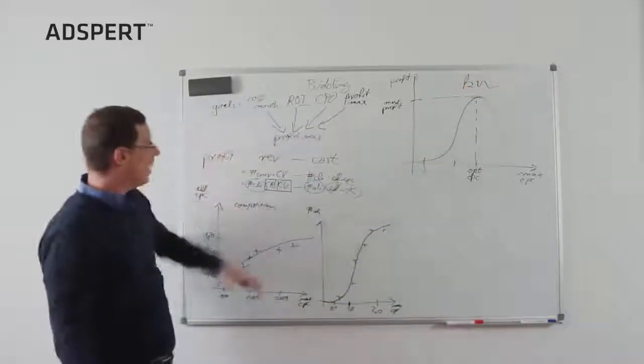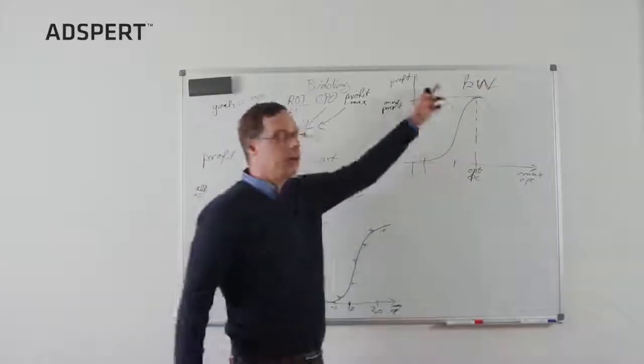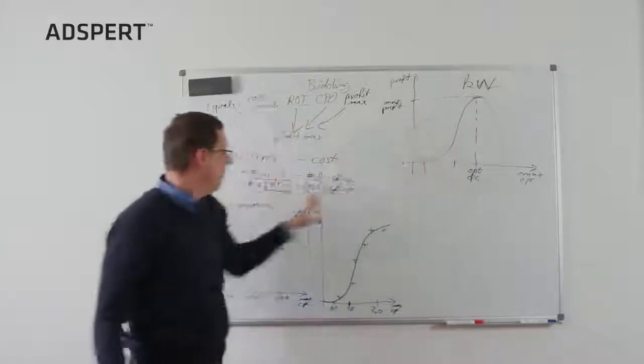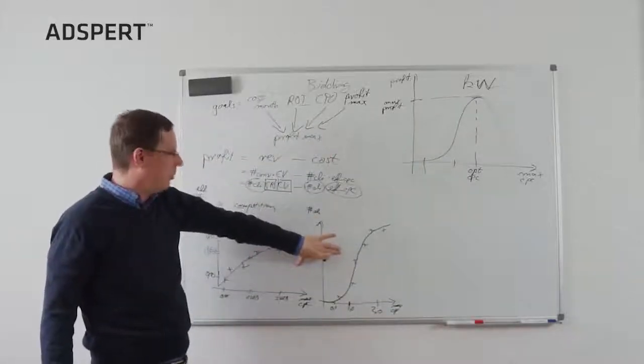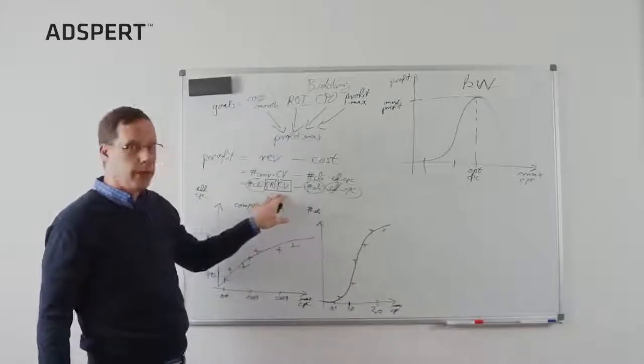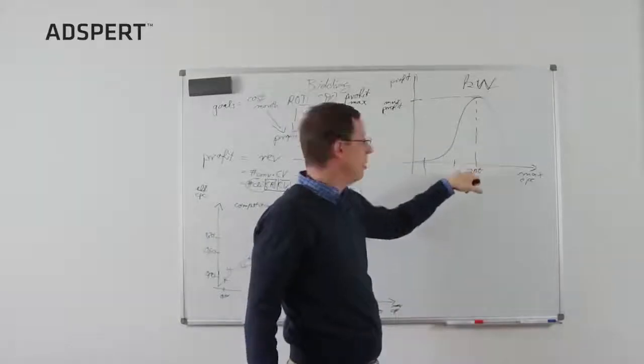This, what I described, is done for each keyword in the account. So, there are 10,000 of keywords. We have 10,000 times two market curves and conversion rate and conversion values. And doing this for each keyword, besides an optimal bid for each keyword.